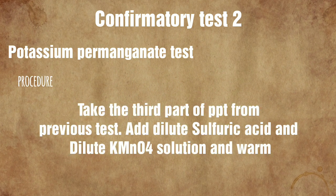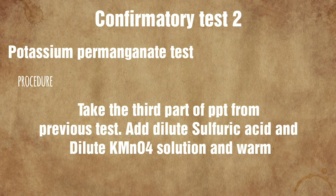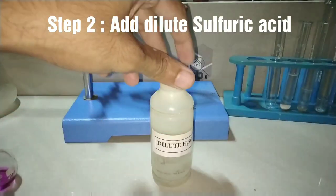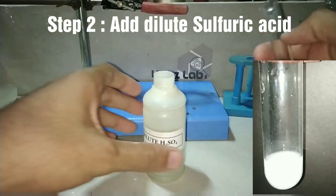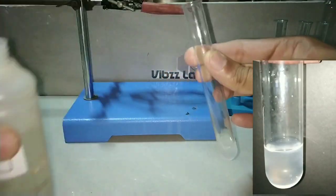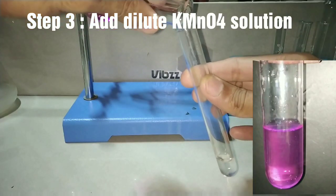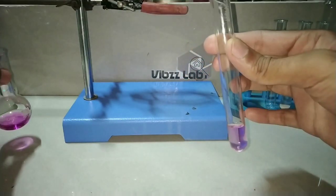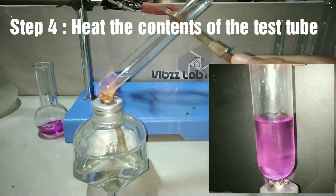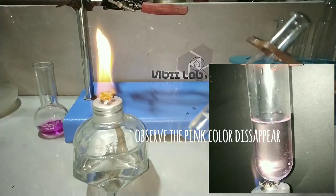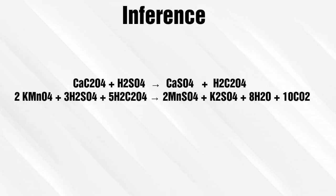The potassium permanganate test: we take the third part of the precipitate from the previous test and add dilute sulfuric acid and dilute potassium permanganate solution, then warm the solution. After adding the dilute sulfuric acid, we add dilute potassium permanganate solution. We are using dilute potassium permanganate here because the color change takes place much faster with small amounts of reactants. On heating, we observe that the pink color is disappearing. Potassium permanganate acts as an oxidizing agent and changes its oxidation state from +7 to +2, thereby decolorizing the solution.